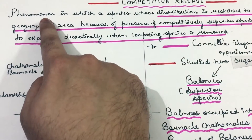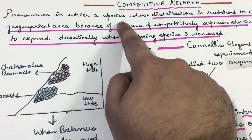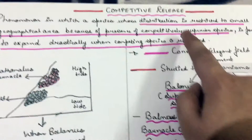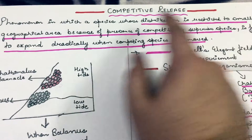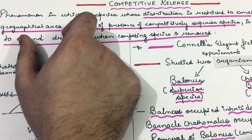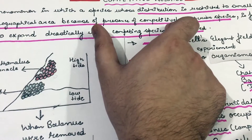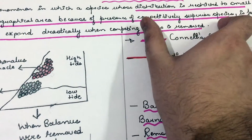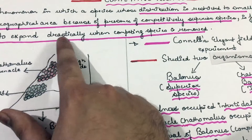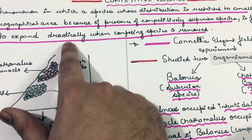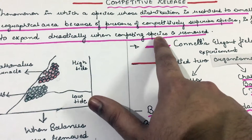Competitive release is a phenomenon in which a species whose distribution is restricted to a small geographical area — because of the presence of a competitively superior species — is found to expand drastically when the competitively superior species is removed.